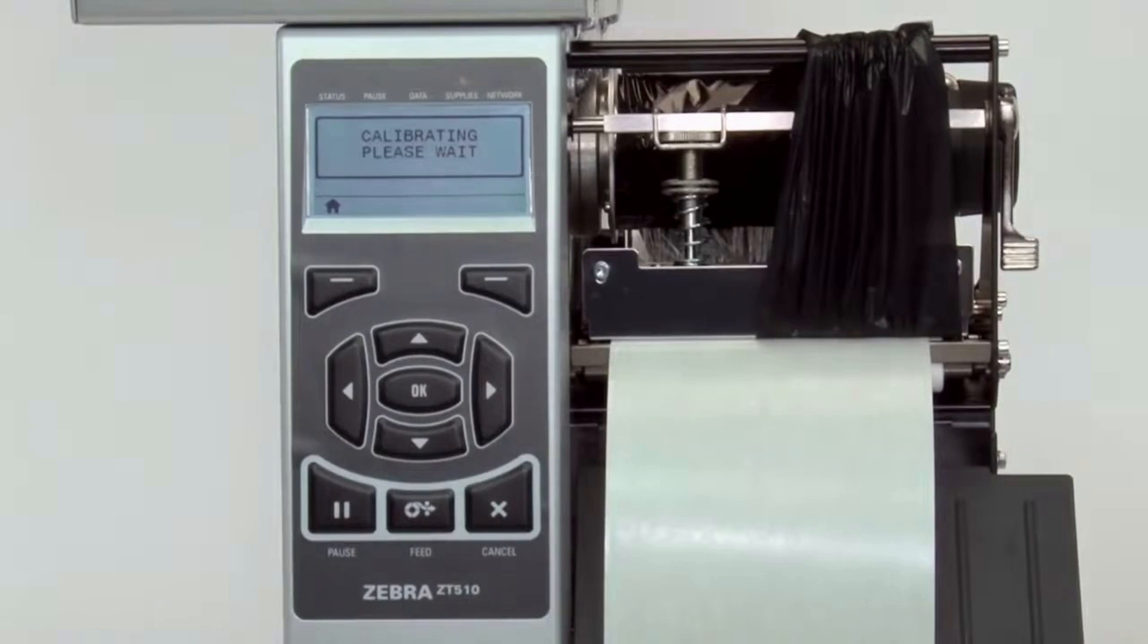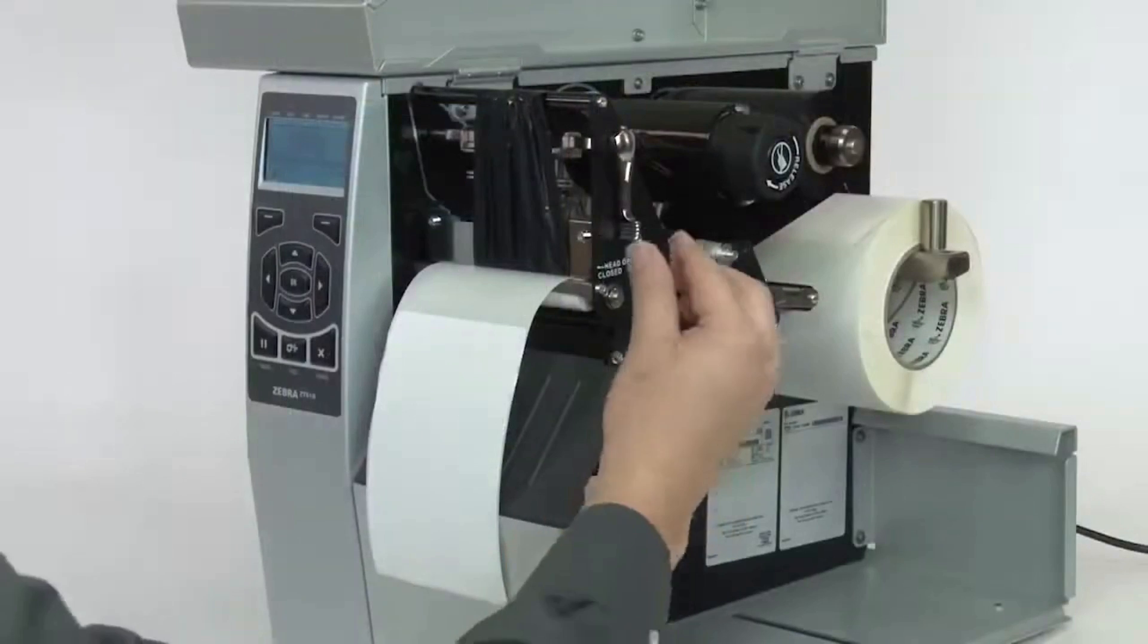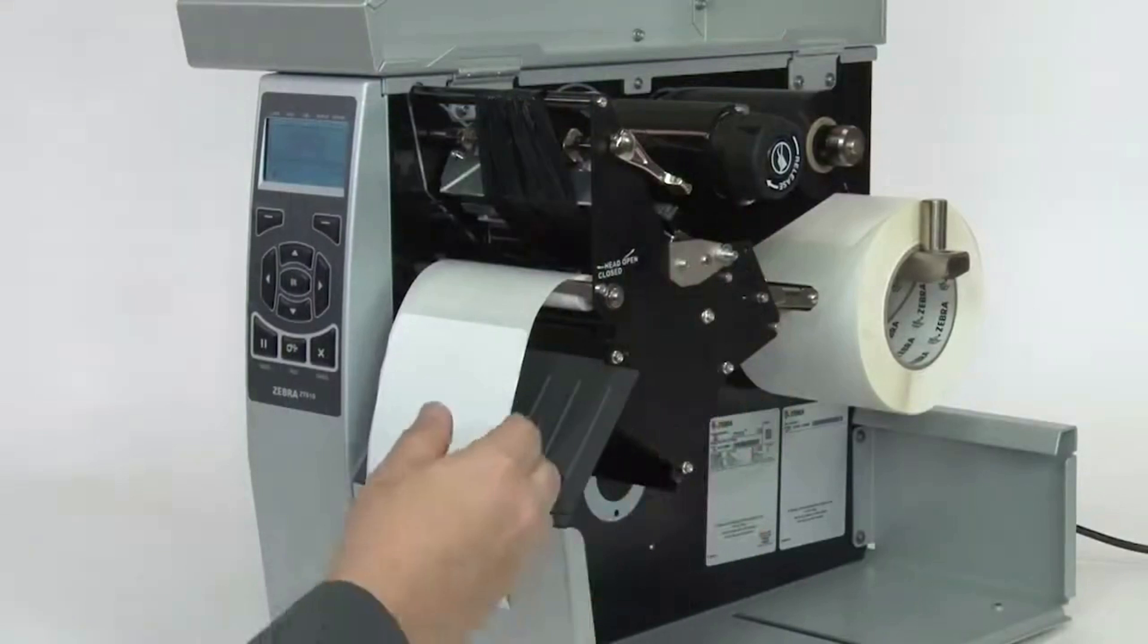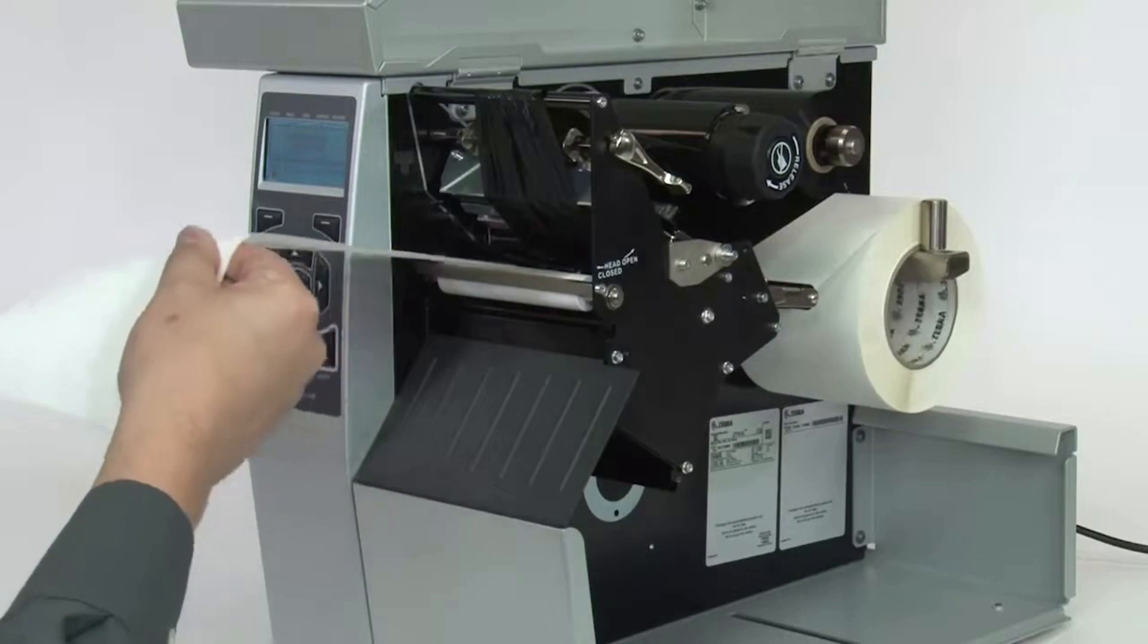When the printer has learned the correct settings, the display will show a reload all message. When reloading the media and ribbon, make sure the media and ribbon are fully inserted. Be sure that the ribbon is located under the ribbon sensor.